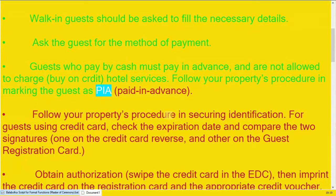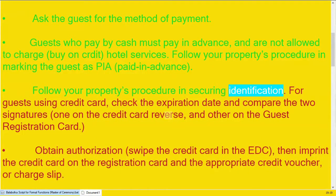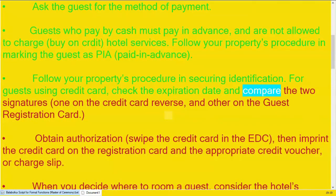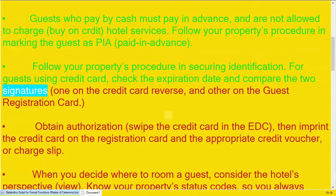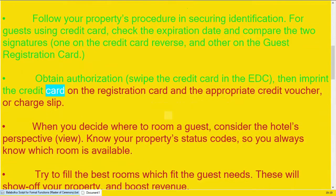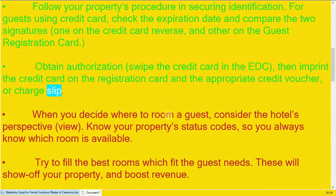Follow your property's procedure in marking the guest as PA. Follow your property's procedure for securing identification for guests using a credit card. Check the expiration date and compare the two signatures. Obtain authorization, then imprint the credit card on the registration card and the appropriate credit voucher or charge slip.